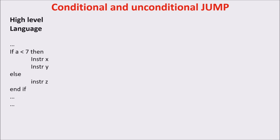Let's see an example of both conditional and unconditional jumps. We use the if-then-else statement. This piece of program says that if A is less than 7, the CPU executes instructions X and Y. Else, if A is larger or equal to 7, the CPU executes instruction Z. This is a typical high-level piece of program, but let's see how we can translate it in our low-level language — the language we have created to represent Scott's CPU operations.